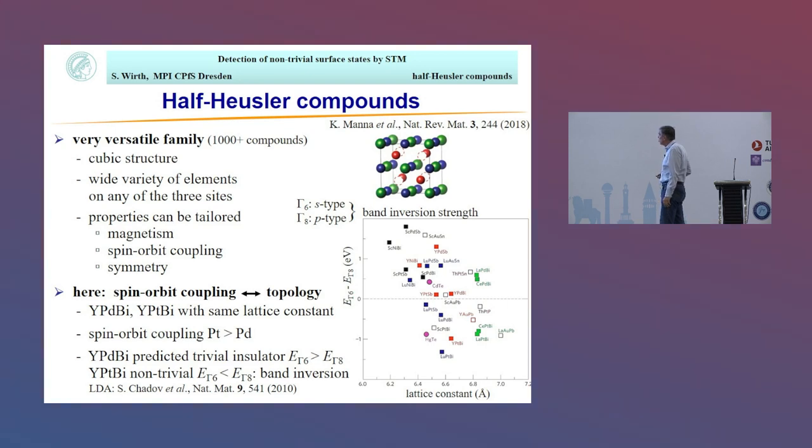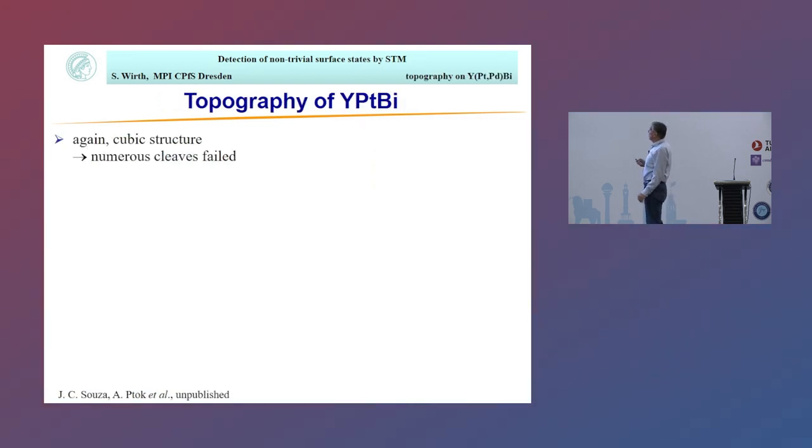What I want to focus on here is the interplay of spin-orbit coupling with topology. I'll focus on yttrium-palladium bismuth and yttrium-platinum bismuth because they have almost identical lattice constants. There's not much happening if you replace palladium versus platinum. You see that here in this plot where we have the lattice constants and the location of the gamma-6 band with respect to the gamma-8 band. They're almost at the very same lattice constant. This tells you about band inversion. If the gamma-6 is above the gamma-8 states, then you have a trivial insulator. But if it's the other way around, you have a band inversion, and that was theoretically predicted more than 10 years ago.